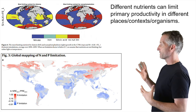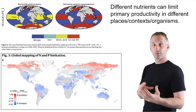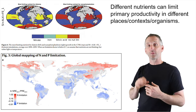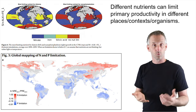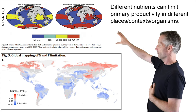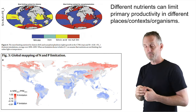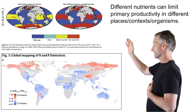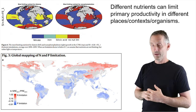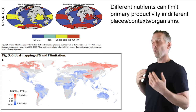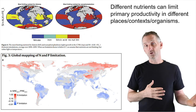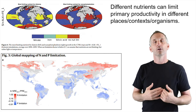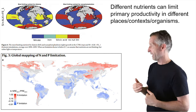Generally, different nutrients can limit primary productivity in different places, contexts, or organisms. In the upper right, you have predictions about the things limiting various forms of production in the ocean, such as diatoms or phytoplankton. You can see that in different places across the globe, things like iron, silica, or nitrates might be limiting. And on the lower left, you have a global map of predictions of nitrogen limitation versus phosphorus limitation of terrestrial plant growth.